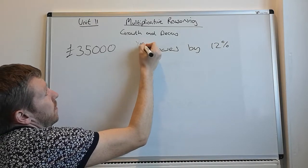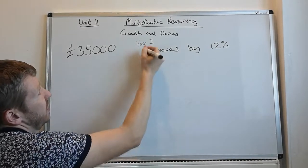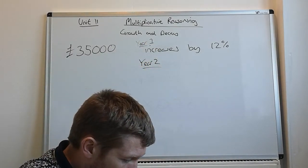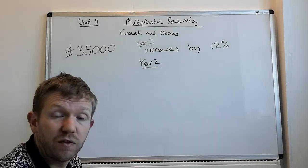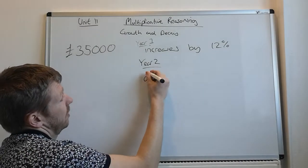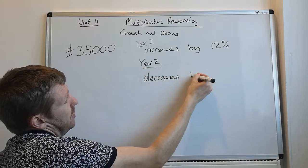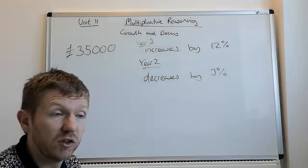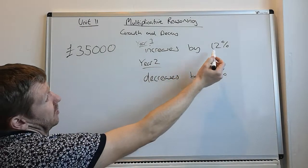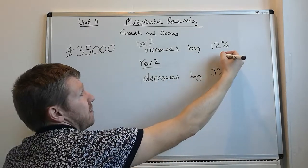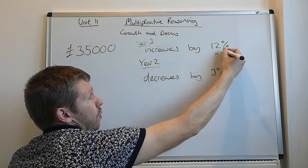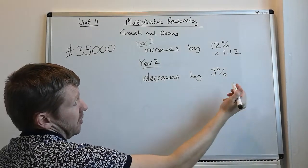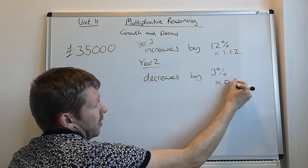So, year one, there's an increase by 12%. Year two, it doesn't have such a good second year. The value of the flat decreases by 3%. All you need to do is work out the value of the flat after two years. So, it's increasing by 12%, that means times by 1.12. And decreasing by 3% means you need to multiply by 0.97.